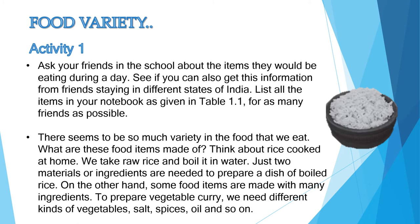Our first topic is food variety. Food variety बताता है कि हम जो भी खाना खाते हैं वो different varieties में available होता है। Activity 1 में आपको अपने friends से पूछना है कि वो एक दिन में क्या-क्या खाते हैं और उस information को एक table में note करना है। जब आप यह करोगे तो पता चलेगा कि हमारे पास बहुत सारी varieties हैं। For example, rice बनाने के लिए सिर्फ rice और water चाहिए।